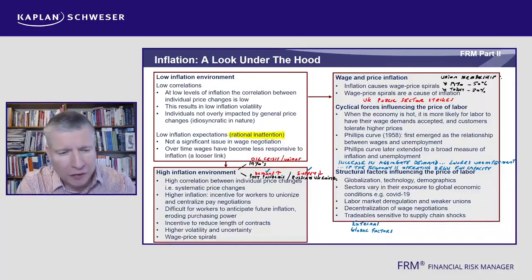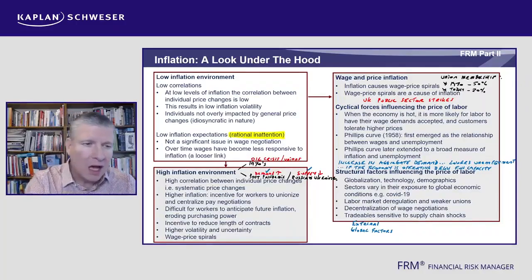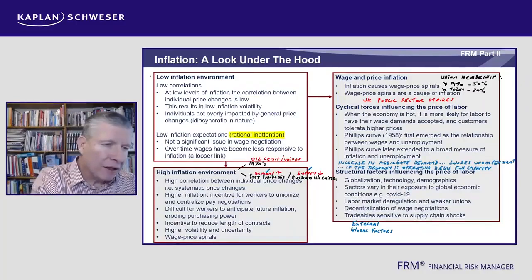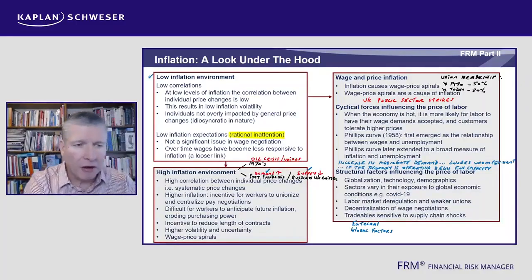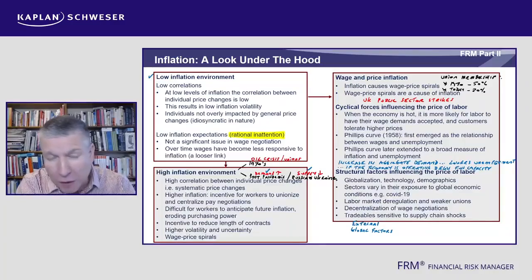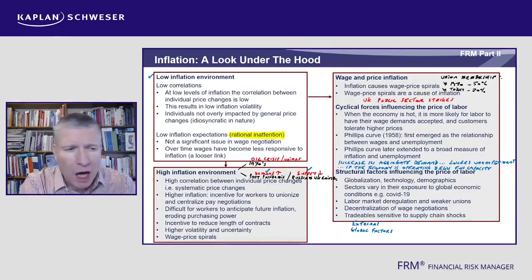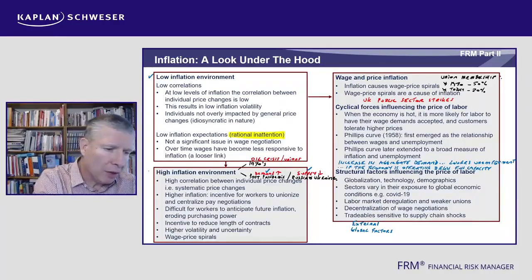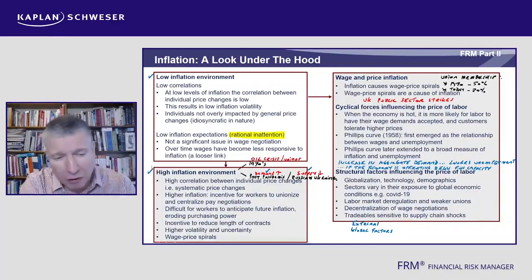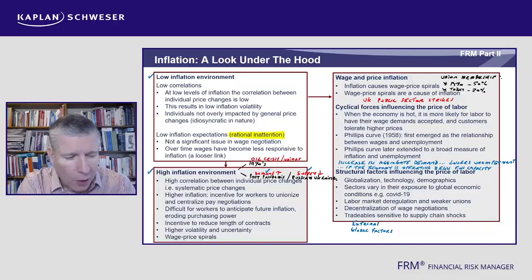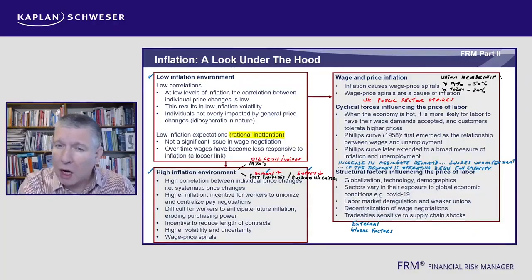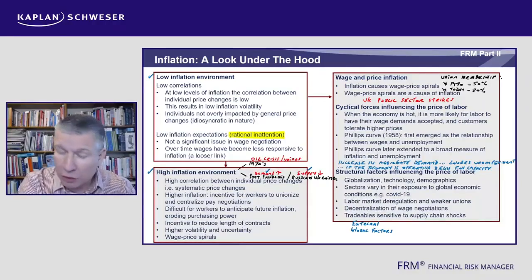Now, we're going to contrast here between these kind of low inflation environments, when interest rates are very low — as they were for quite a long time — and then comparing this with the high inflation environments. What we're going to see is that high inflation really starts to interact, particularly of course with wages and with wage negotiations, which can create quite a spiral.